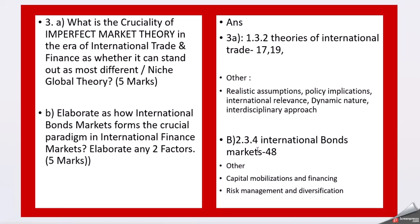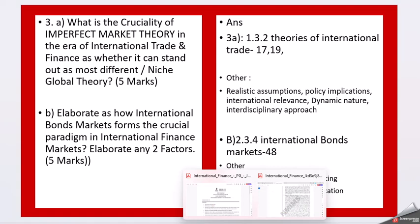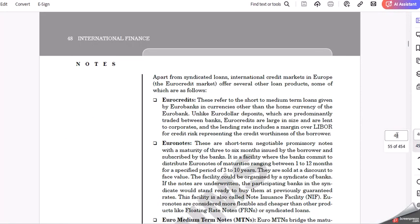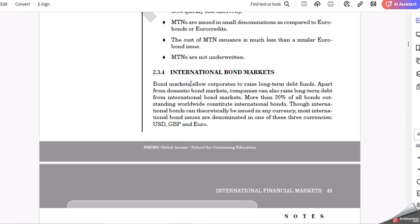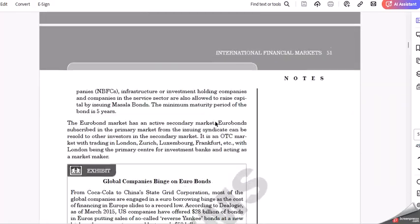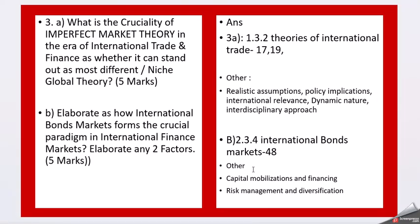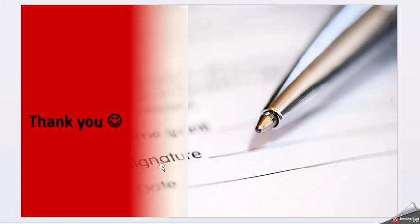For the second part of question three, look at the international bond market on page number 48 in chapter 2. You can get the details there. The two factors to elaborate can be: capital mobilization and financing, and risk management and diversification. You can look into these factors from open sources and write them in your own words. Thank you, and thank you to Guru Piari Sony for sharing these questions — it's really nice to see someone wanting to support others.